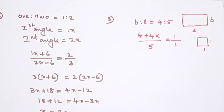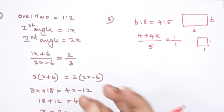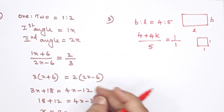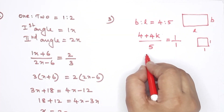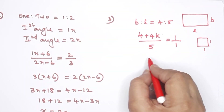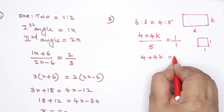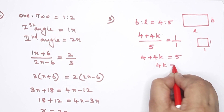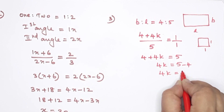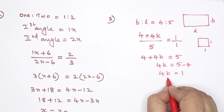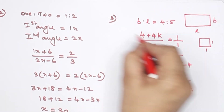What fraction should be added? If you add 4k to the shorter side and 5 to 5, then find the value of k. Cross-multiplying: 4 plus 4k is equal to 5. So 4k is equal to 5 minus 4, then 4k equals 1, therefore k is equal to 1 by 4. The fraction to be added is 1 by 4.